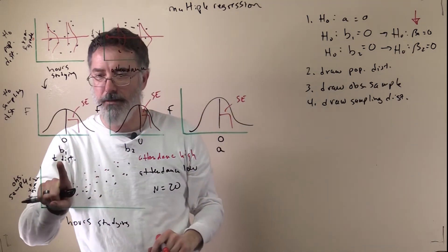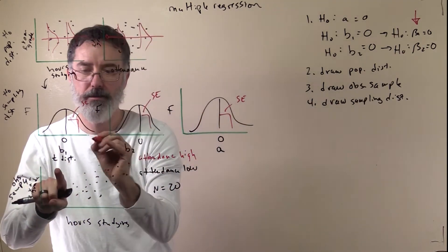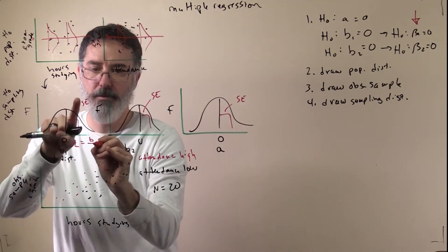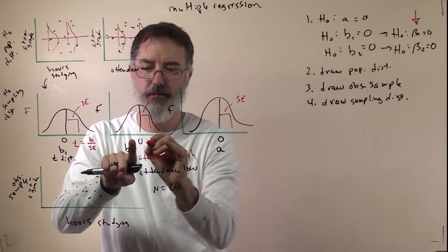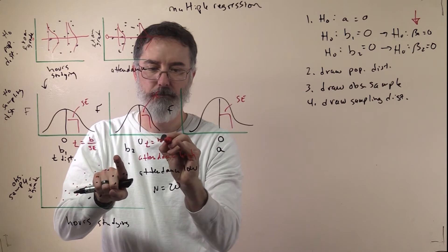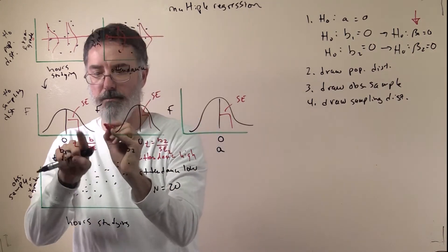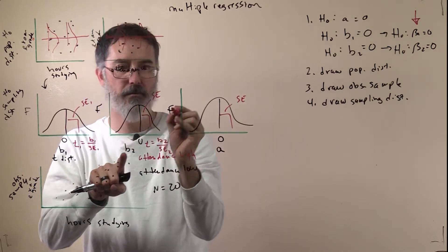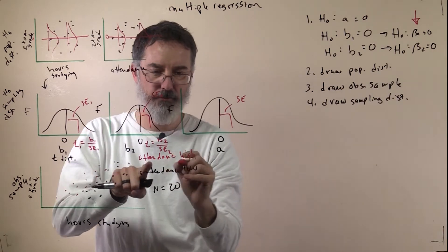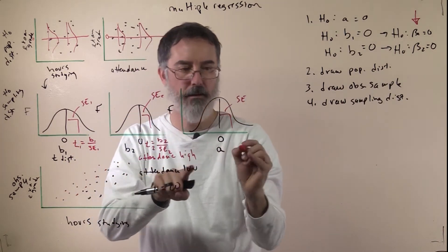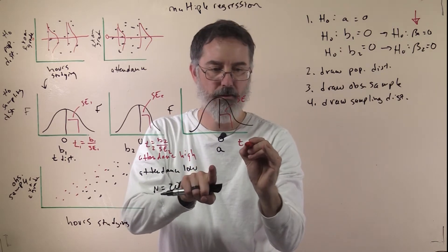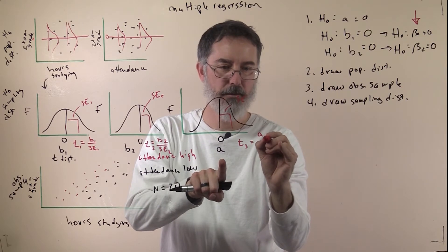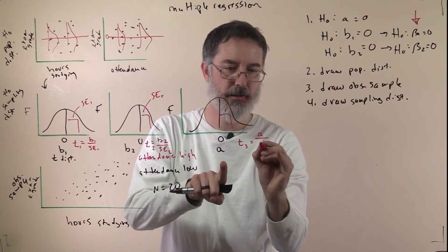It turns out that to calculate the t-statistic, the formula is straightforward: t equals the slope divided by its standard error. That will be true for all three — for variable one it is B1 divided by its standard error, for variable two it is B2 divided by its standard error, and for the intercept it is the intercept value divided by its standard error.